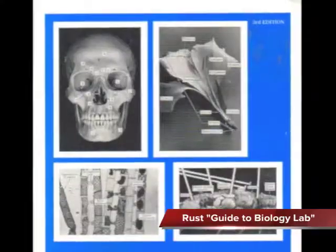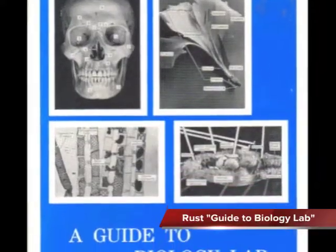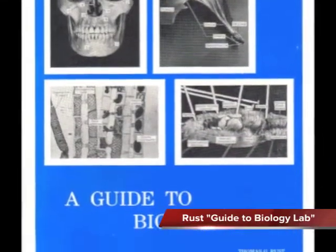Also for lab, you want to have the Rust photographic atlas — it's the Rust Guide to Biology Lab — and it helps with all the different dissections we'll be doing and some of the prepared slides we'll be looking at over the course of the semester.